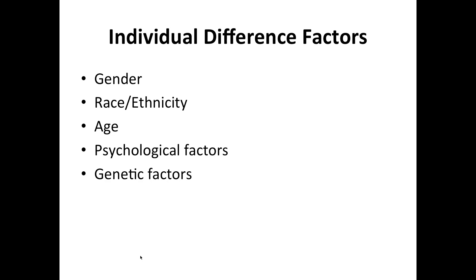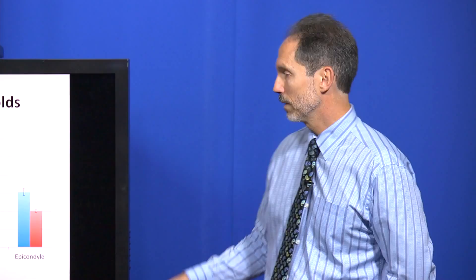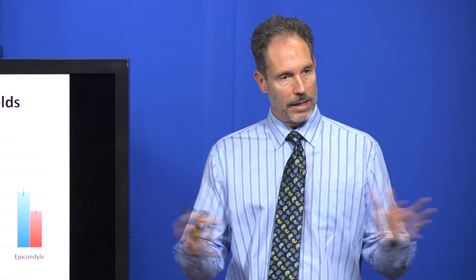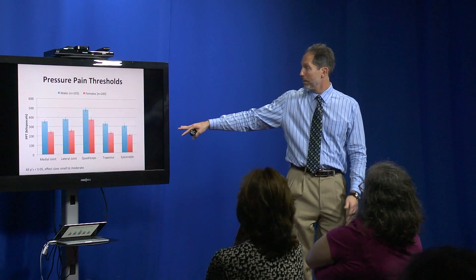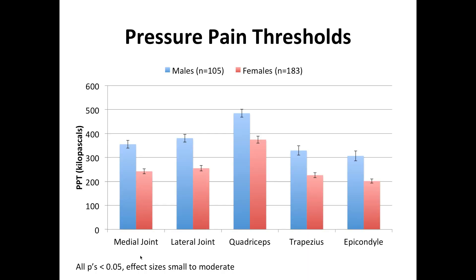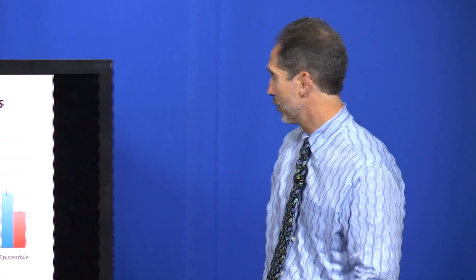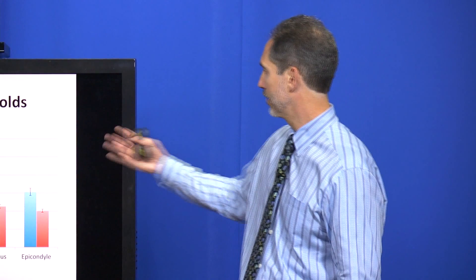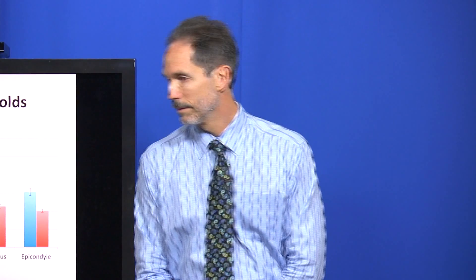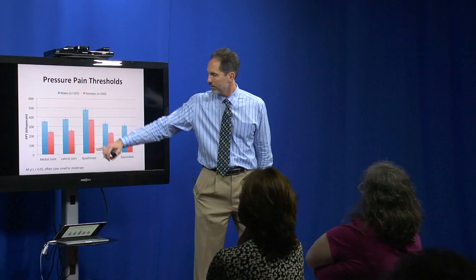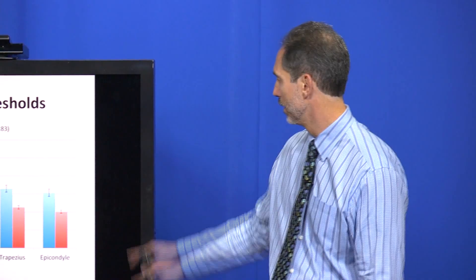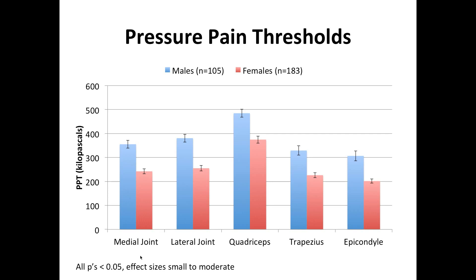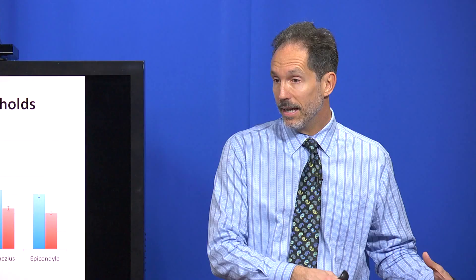Here are some examples of gender differences. In a study of middle-aged and older adults with knee arthritis, we assessed pressure pain threshold—how much pressure do we have to apply for you to first feel pain? Higher values mean lower sensitivity to pain. The blue bars, which are male, are higher than all the pink bars, which are female, and these results are all significant. Whether we're testing at the knee joint, the quadriceps, the trapezius, or the epicondyle, we see the same pattern of gender differences.